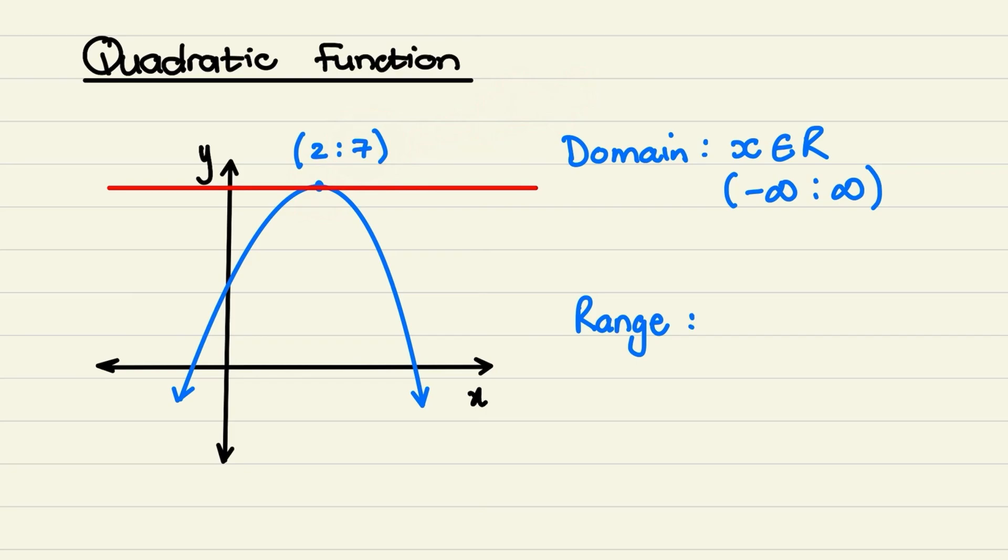So the range is, y must be smaller or equal to 7, meaning all the values from 7, including 7, downwards.